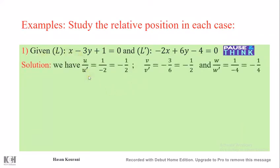Solution: First, we identify the parameters. U is 1, V is minus 3, and W is 1. U prime is minus 2, V prime is 6, and W prime is minus 4. We compute U/U' = 1/(-2) = -1/2, V/V' = (-3)/6 = -1/2, and W/W' = 1/(-4) = -1/4.